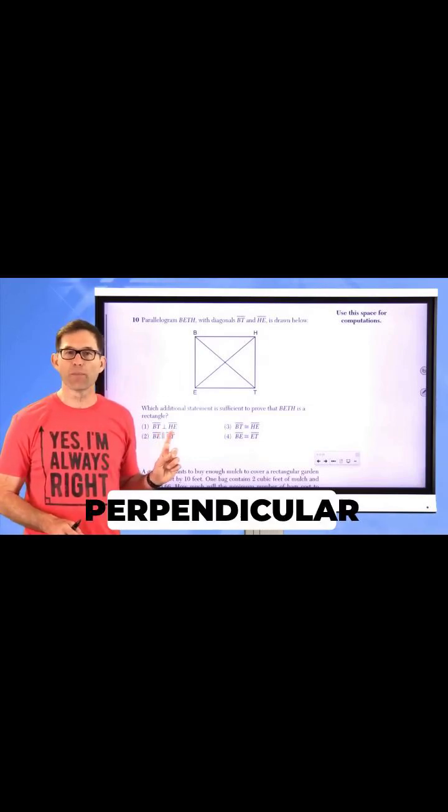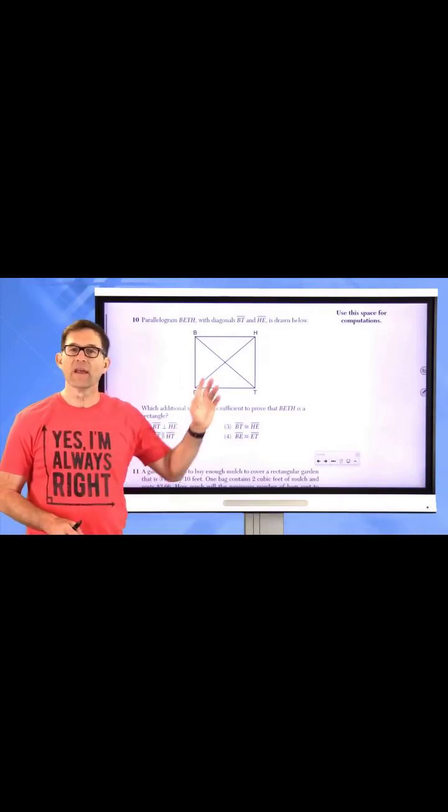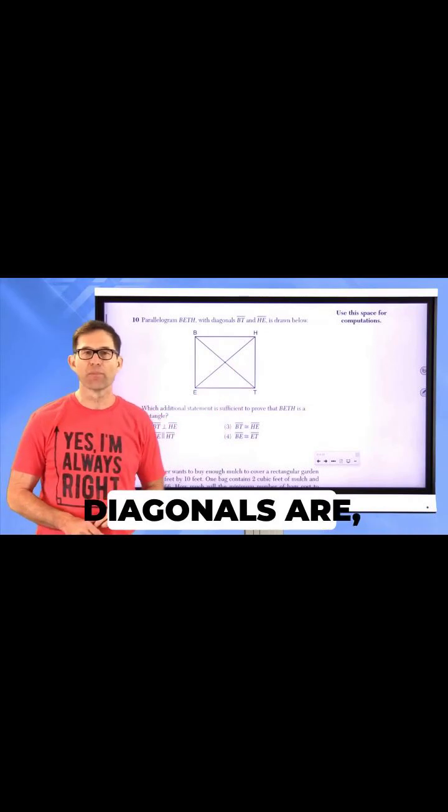Choice one is BT is perpendicular to HE. In other words, the two diagonals are perpendicular.